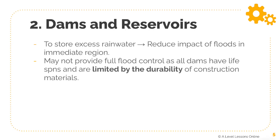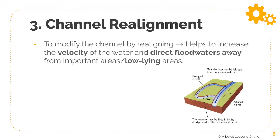Next are dams and reservoirs. These store excess rainwater and reduce the impact of floods by lowering the water level in the river channel in that immediate region. However, they may not provide full flood control, as dams have lifespans and are limited by the durability of construction materials. Dam failures — caused by wear and tear — can actually release more water and cause greater flash floods. On the positive side, dams are a good way of storing excess water and can also generate hydropower.